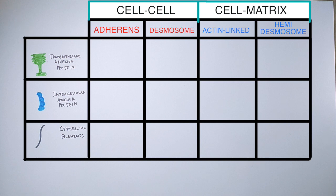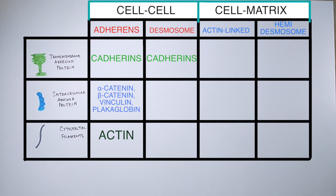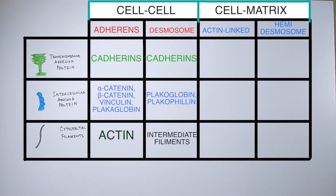Let's see which protein is present in each of these four junctions. In adherens junctions, the transmembrane linker protein is cadherin. The intracellular anchor proteins are alpha-catenin, beta-catenin, vinculin, and plakoglobin, and the cytoskeleton filaments are actin filaments. In desmosomes, the transmembrane linker is also cadherin, but the anchor proteins differ — they include plakoglobin and plakophilin. The cytoskeleton filaments in desmosomes are intermediate filaments.